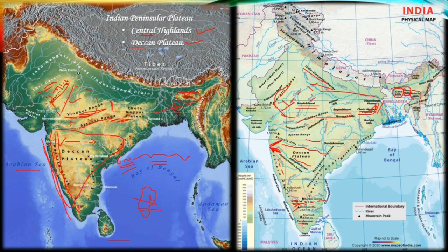The Eastern Ghats extend from the Mahanadi Valley in the north to the Nilgiri Hills in the south. The Eastern Ghats form a discontinuous, irregular and dissected topography, because all the rivers coming from the western side and draining into the Bay of Bengal dissect the Eastern Ghats.